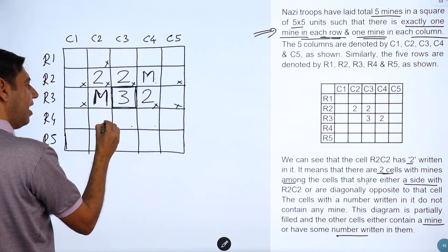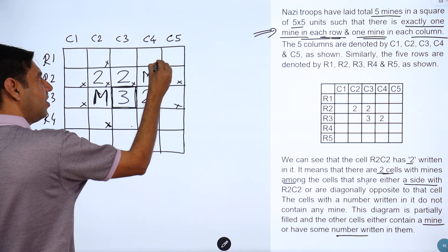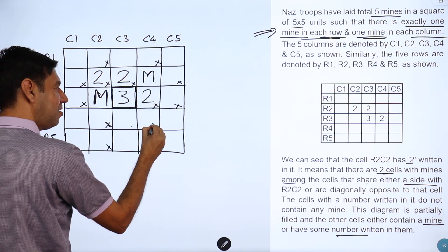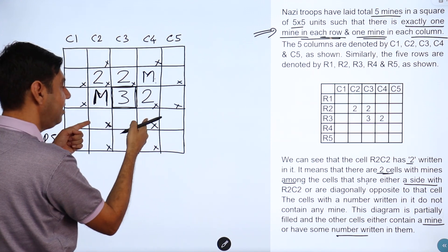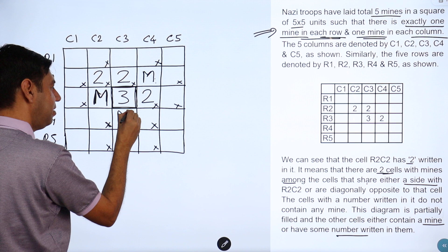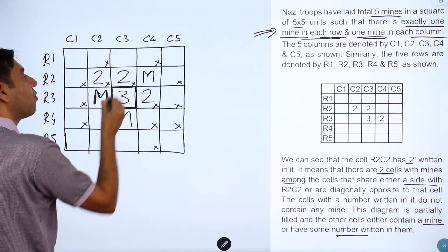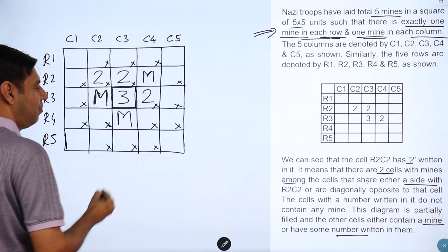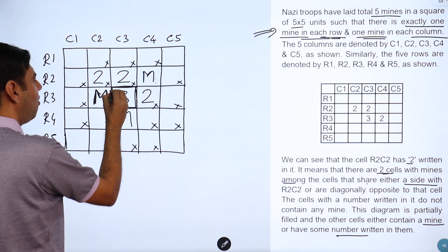There cannot be a mine here. Cross out this column. There cannot be a mine here also. So obviously here there had to be one mine - that can't be there, so has to be here. You got a new mine. Cross out the rows, cross out the columns. That is very important. So already three mines are placed.